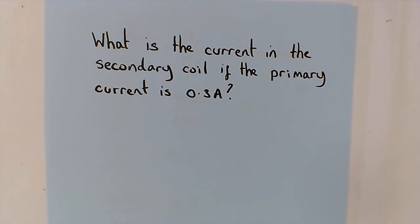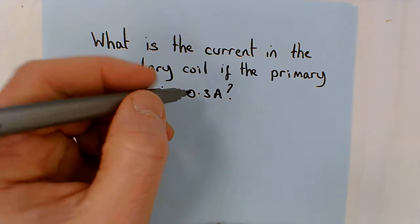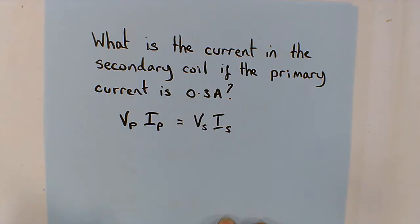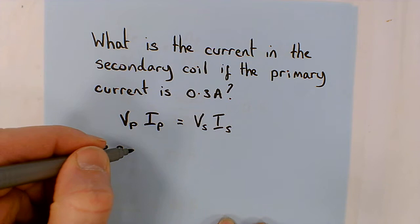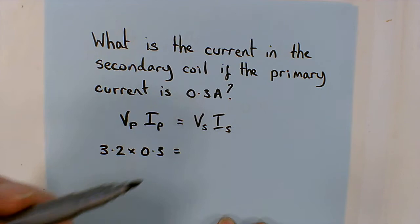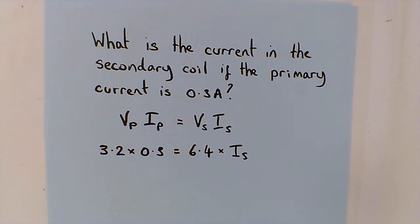Okay, so first of all I'm going to write down the equation. This is potential difference in the primary times current in the primary equals potential difference in the secondary times current in the secondary. Now we knew the voltage in the primary which was 3.2 and we also know the current in the primary which is 0.3. We knew the V in the secondary which was 6.4 but we don't know the current in the secondary.